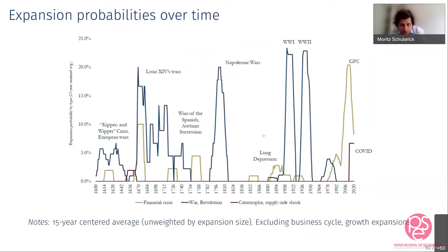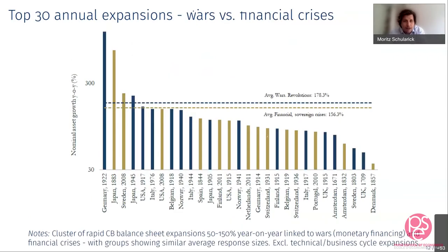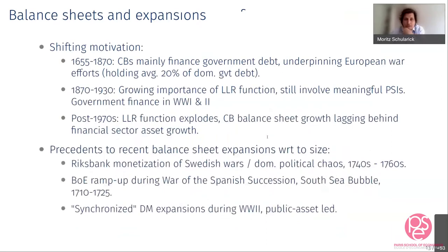This timeline shows the probability of seeing a central bank expansion in a 10-year window. Blue is war/revolution — government finance events. The yellow or beige line is the probability of seeing a central bank balance sheet expansion driven by a financial stability or financial crisis event. You see that outside the wars and in the second half of the 20th century, financial stability has become the main role for central bank balance sheet usage. That's the same message: the shifting motivation from war finance to large balance sheet expansions during financial crises.